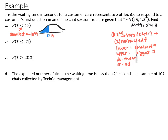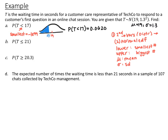Use your graphing calculator: go to 2nd VARS (distribution), then number 2, normalCDF, because we want cumulative probability. For the lower bound, use negative 1E99 (negative 1 with 99 zeros). The upper bound is 17 since we want everything less than 17. Mu is 19 and sigma is 1.3. Hit paste and that gives your probability. Plugging it all in, the probability that the time is less than 17 minutes equals 0.0620 — about a 6.2% chance.